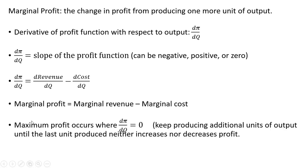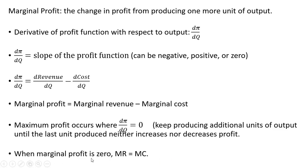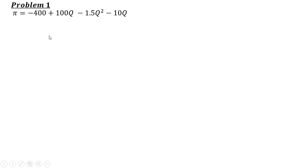Maximum profit occurs where marginal profit is zero — we keep producing additional units of output until the last unit produced neither increases nor decreases profit. When marginal profit is zero, it means that marginal revenue will equal marginal cost.